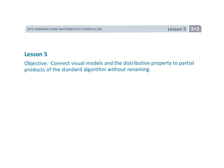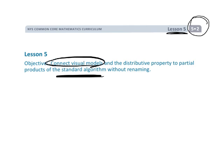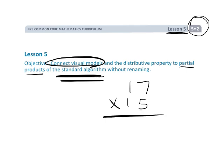All right, this is Grade 5 Module 2 Lesson 5. In this problem we are going to be learning the standard algorithm for multiplying, but we're going to begin with a visual model and using partial products — so that ultimately all students will be using that classic standard algorithm. We're going to begin with the visual model so that students really have something to hold on to, and that makes math make sense.